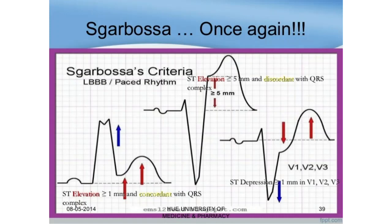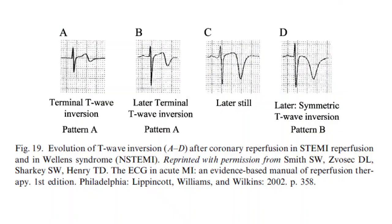The Smith modification made it much more sensitive and specific. I have never had a problem picking out a transmural MI in the presence of a pacemaker or a left bundle branch block using Sgarbossa criteria with the Smith modification. This is another thing you should remember — the evolution of T-wave inversion after coronary reperfusion — but understand that this can be present after any period of extreme ischemia, such as Prinzmetal's angina or Wellens syndrome. It's important to recognize that this is a sign of the aftermath of ischemia and sometimes injury.